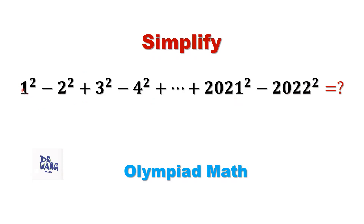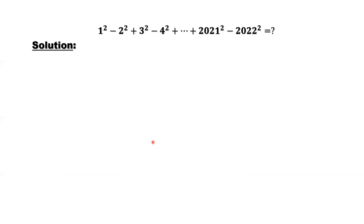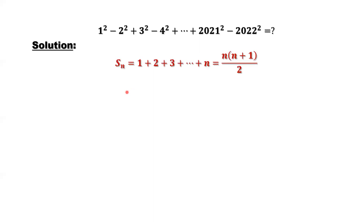For each odd number squared, the sign in front is plus. For each even number squared, the sign in front is minus. There are different ways to solve this kind of problem. For example, we can put all odd number squares together and group even number squares together, use a formula, calculate the result for two groups, then subtract. This is one method. You may have a different method, so here we use a different method.